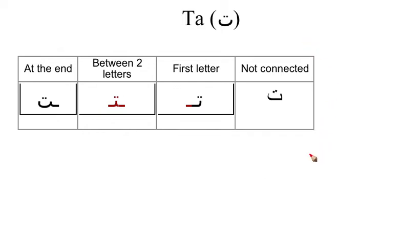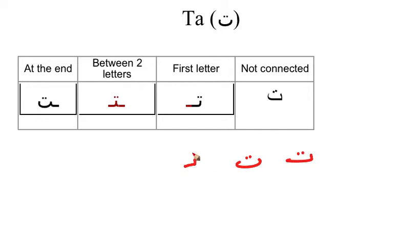This is the letter TA when it is by itself — two dots. It is like you are drawing a dish, a wide flat dish. If it is at the beginning, we make this edge and put two dots. If it is in the middle, we make the line edge and two dots. If it is at the end, it is going to be connected to the letter before it.